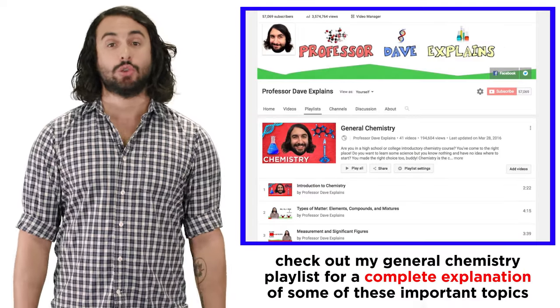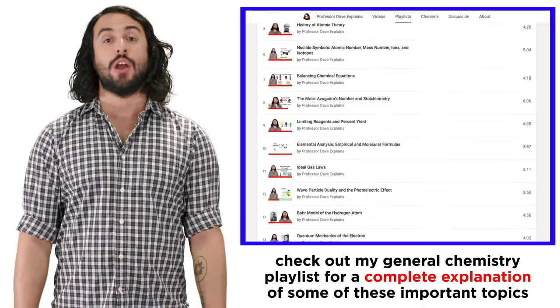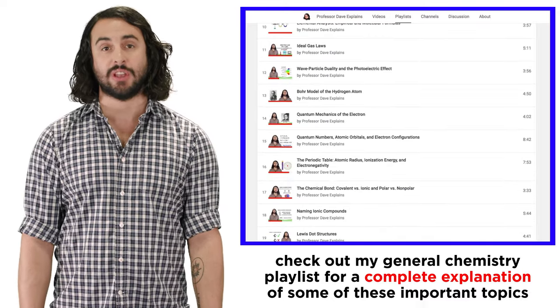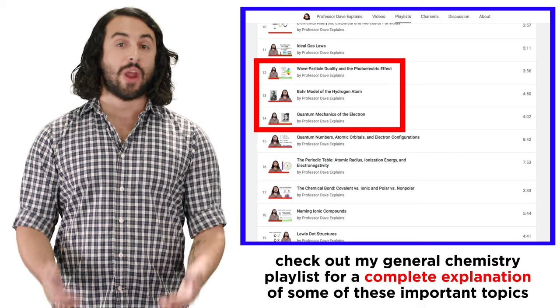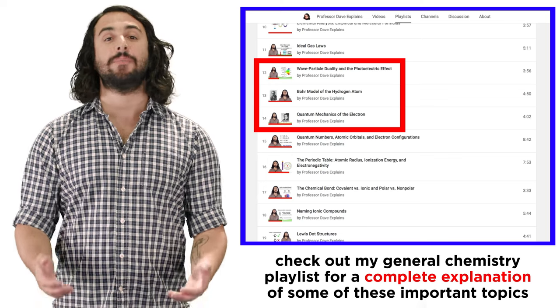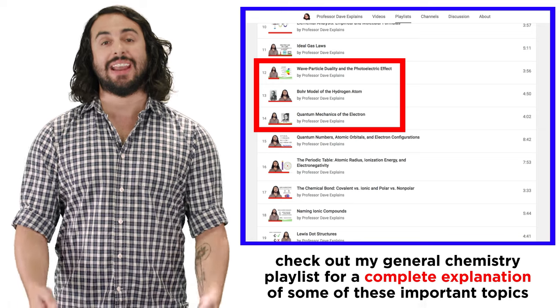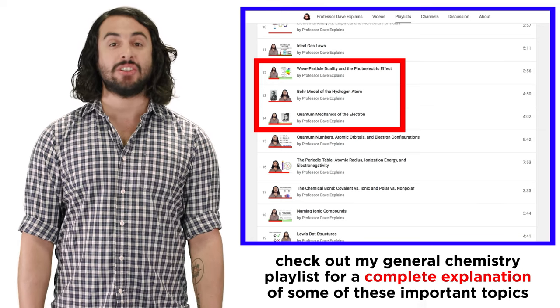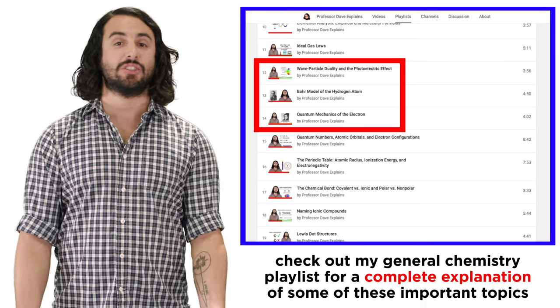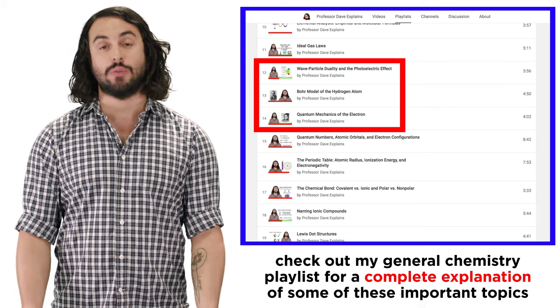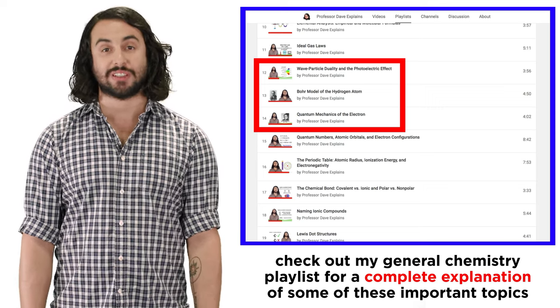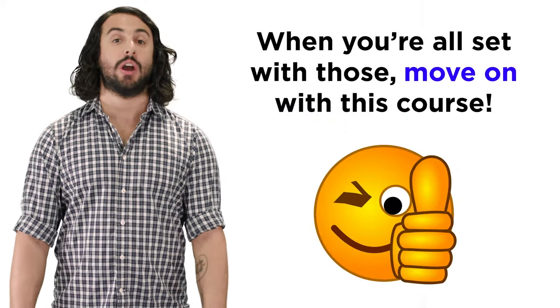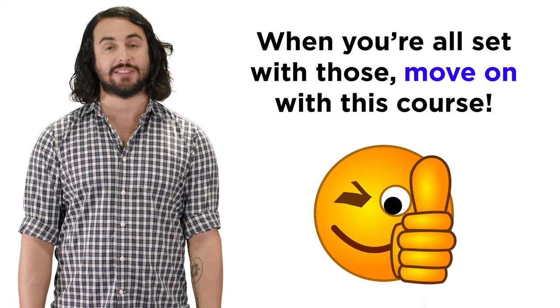Once again, tutorials 12 through 14 from the general chemistry course cover the photoelectric effect, the Bohr model of the hydrogen atom, wave particle duality, and some basic quantum terminology in greater detail than we have mentioned here, so it is highly suggested that you take a moment to review these materials before proceeding with the modern physics course. If you are good to go, let's move on to some new concepts.